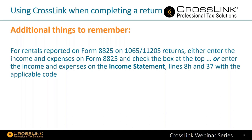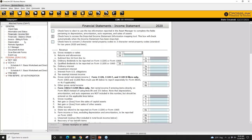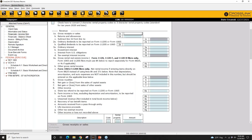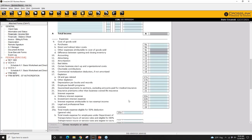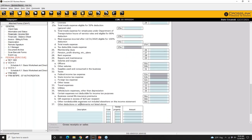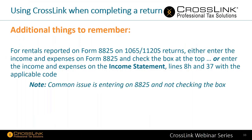For rentals reported on Form 8825 on either a partnership or 1120S return, you can either enter the income and expenses on Form 8825 and check the box at the top, or enter the income and expenses on the income statement — found on lines 8h and 37 with the applicable code. On the income statement within a partnership, you'll find line 8h, and scrolling down you'll find other deductions on line 37. A common issue is entering on the 8825 and then not checking the box.